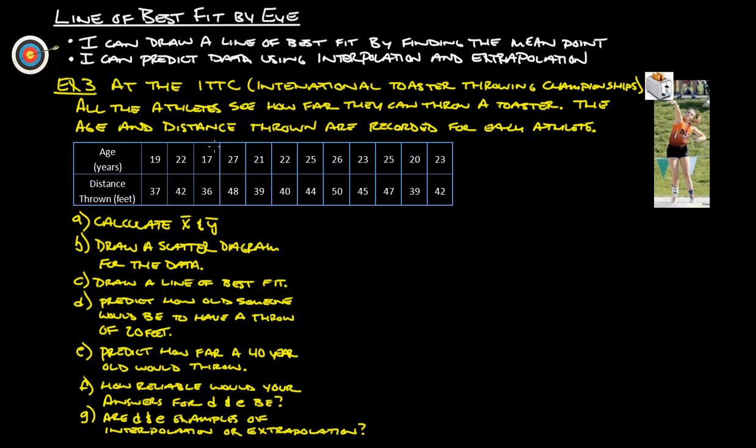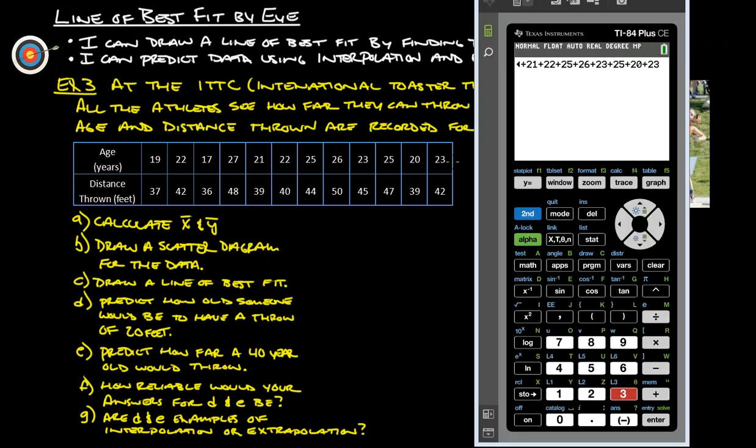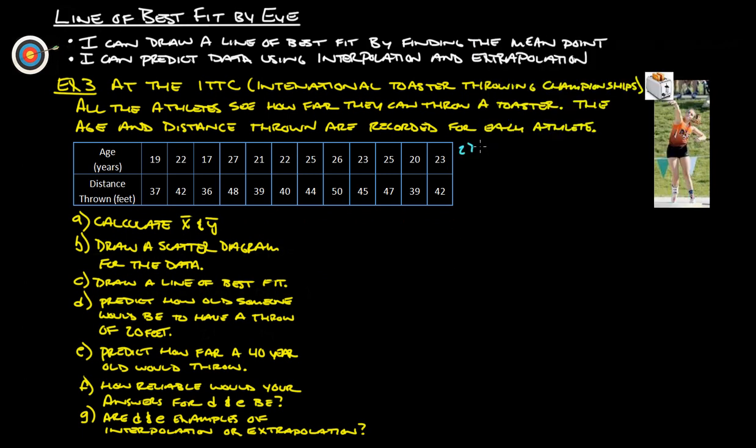We don't actually have to use the graphing calculator for this. We can simply add these all up and divide by the total number to find our mean for x and our mean for y. So here we are. I added those all up, push equal, that's 270. There's 12 total pieces of data, so divide that by 12. That will give us our mean point for the x.